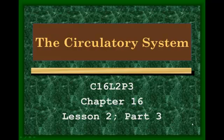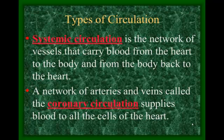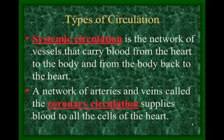Part three of the circulatory system begins with the types of circulation. There are three of them. Systemic circulation is where blood goes from the heart to parts of the body by way of arteries and then comes back to the heart by way of veins.